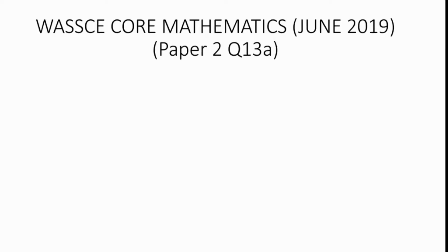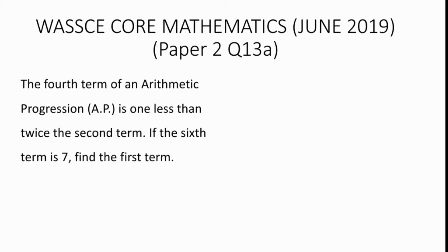2019 Equal Mathematics Paper 2, Question 13a. The fourth term of an arithmetic progression (AP) is one less than twice the second term. If the sixth term is 7, find the first term.